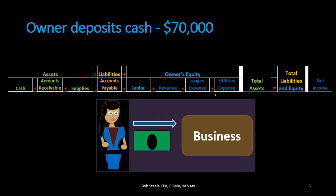The normal rules will remain the same when recording transactions: every transaction will have at least two accounts involved, and every transaction will remain in balance — meaning assets equal liabilities plus equity will always hold. In the asset accounts we have cash, receivables, and supplies. Under liabilities we have accounts payable, and in owner's capital we have the capital and the entire income statement of revenue and expenses. Total assets will always equal total liabilities and equity, and we'll see the impact on net income.